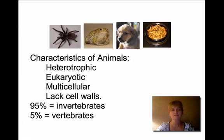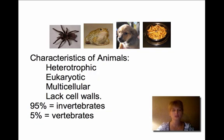The animal kingdom is very diverse, but there are some specific characteristics of animals. They are heterotrophic, so they have to consume other organisms for energy — whether they consume plants or animals, they can't create their own energy. They have eukaryotic cells, which means their cells have a nucleus, and they are multicellular — more than one cell — but different from plants because their cells lack cell walls.